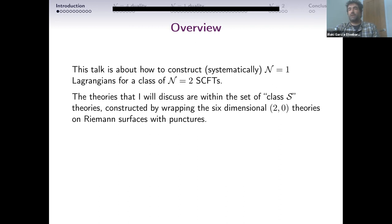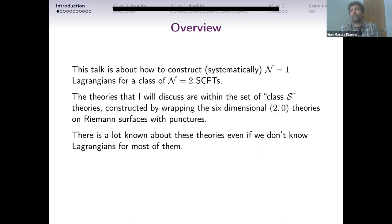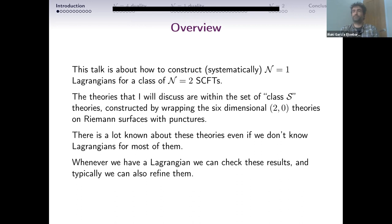The theories I will discuss are within the set of Class S theories. You construct these theories by wrapping (2,0) theories in six dimensions on Riemann surfaces. We know many things about these theories from beautiful papers extracting important information, but we don't know Lagrangians for most of them. You still want Lagrangians because whenever you have one, you can check derived rules and typically obtain more refined information.